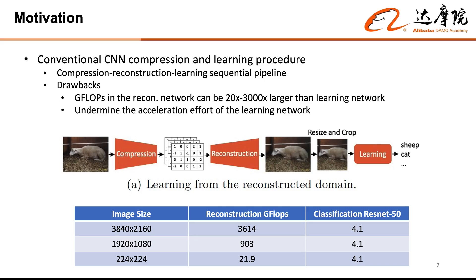This is especially true as image resolutions grow larger. For example, in this table, reconstructing an image costs over 3600 GFLOPs, while a simple image recognition using ResNet-50 only requires 4.1 GFLOPs.